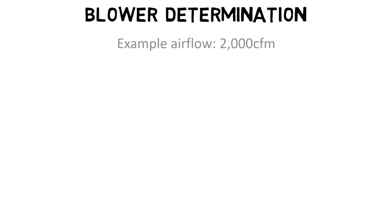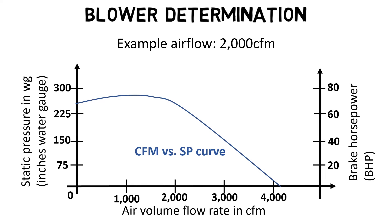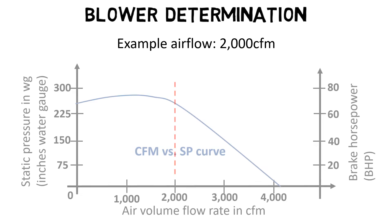Step one: draw a vertical line upwards from the calculated CFM amount — 2,000 CFM in our case — until it intersects with the fan curve.